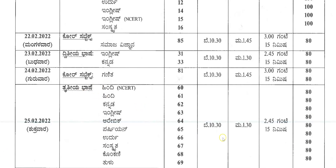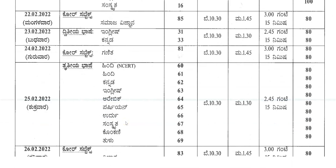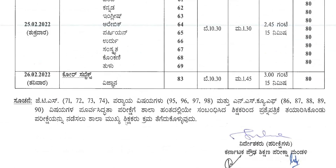On 25th February you have Trithiya Bhaashe — that is Third Language — timings 10:30 AM to 1:30 PM, 2 hours 45 minutes plus 15 minutes, total marks 80. On 26th February, the core subject is Science — Vignana — timings 10:30 AM to 1:45 PM, total time duration 3 hours 15 minutes, and total marks awarded 80.